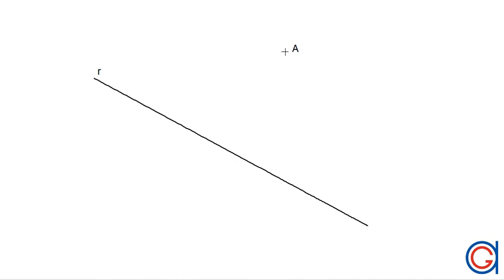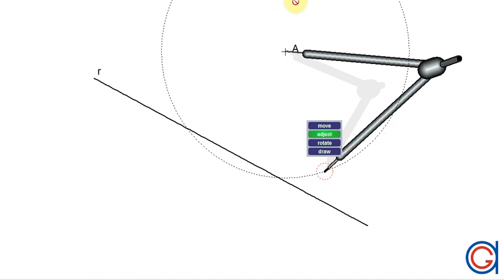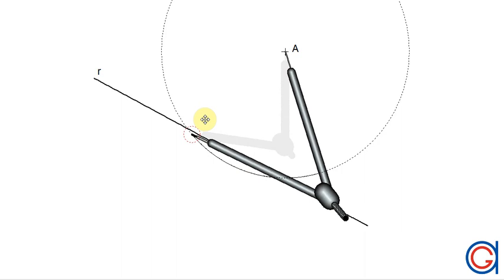Hello, today we are going to learn how to draw a perpendicular line to a given line R through a given external point A using a compass, as can be seen here.